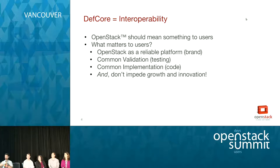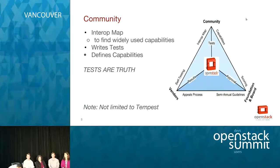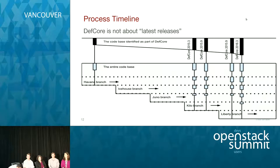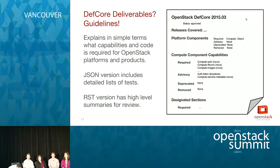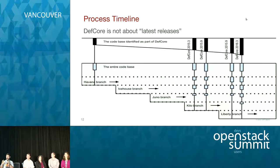We went very deliberately and carefully in addressing how we would make those decisions so that it was a community-driven process. The important thing to understand — and this is often confusing — is this is a commercial distinction. It's about the OpenStack brand. It's not about whether you're a project or not. There are several good talks about Big Tent and how projects get into the OpenStack community. This is about how vendors get to use the brand.